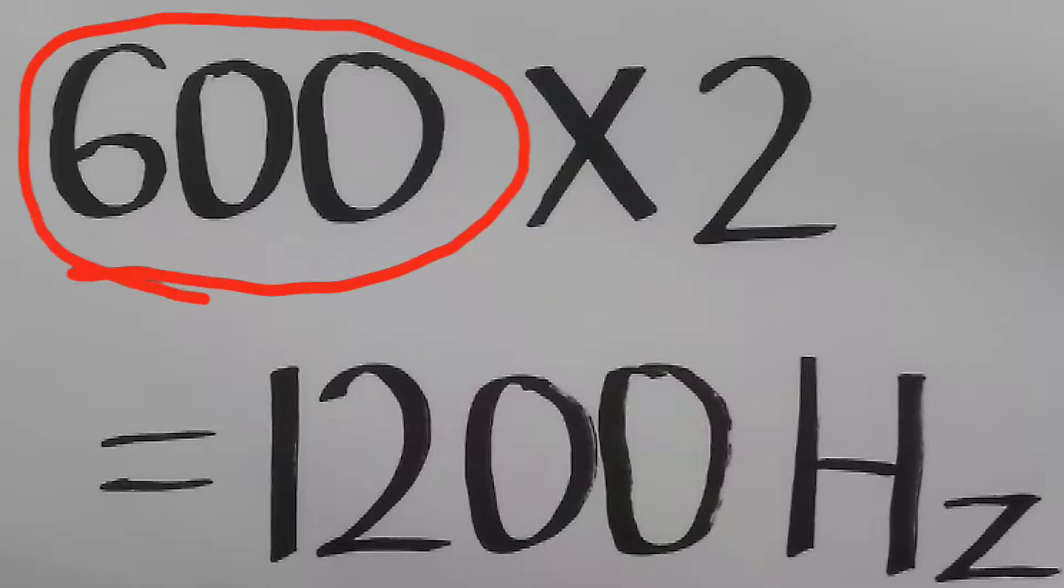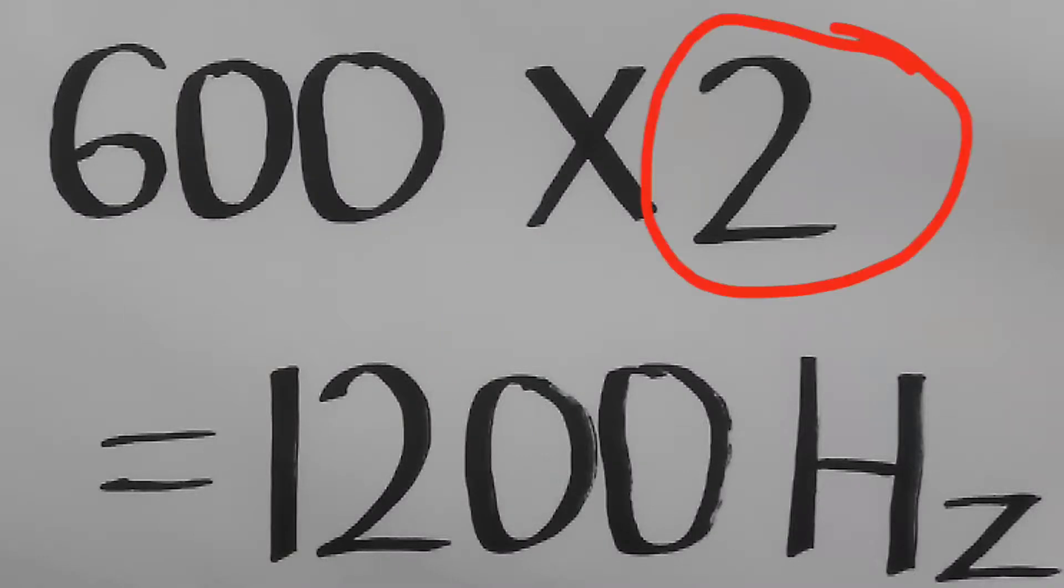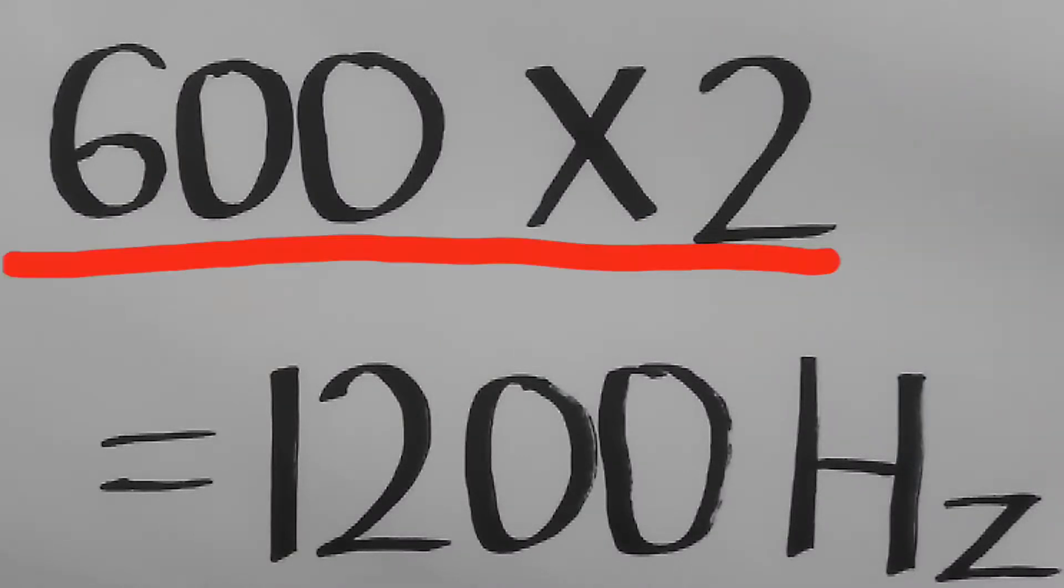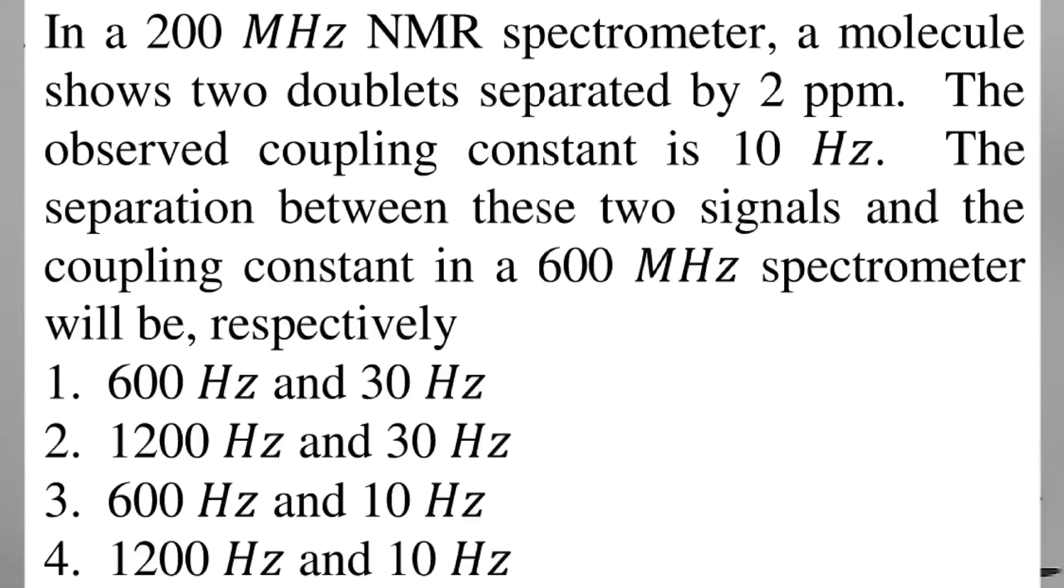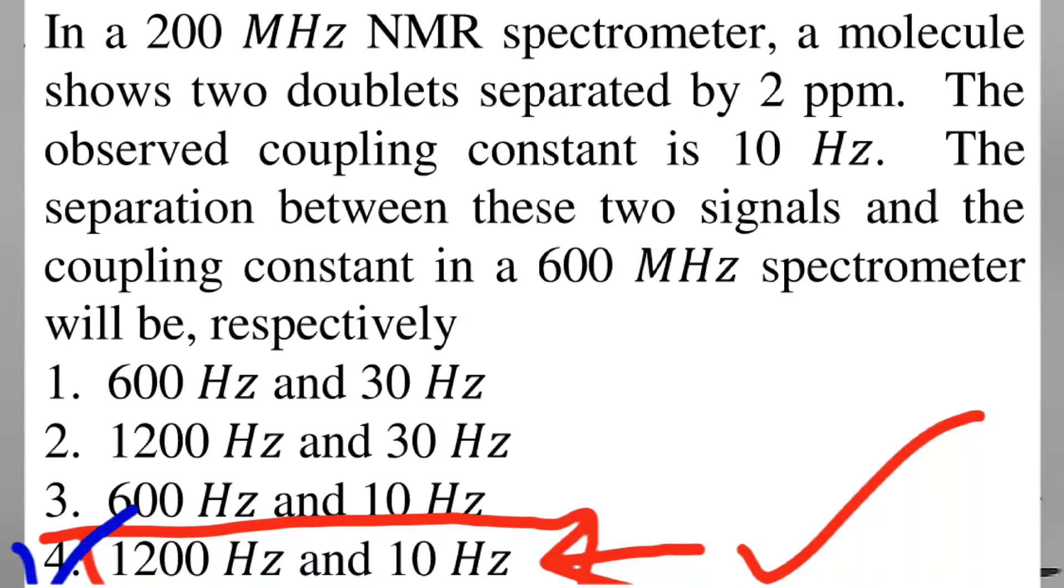In a 600 megahertz spectrometer, the doublets separated by 2 ppm must be multiplied by 600, and we get 1200 Hz as the answer. So, option B is the correct choice.